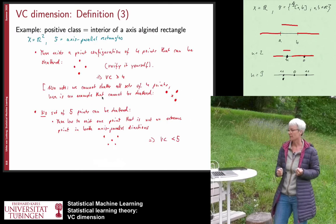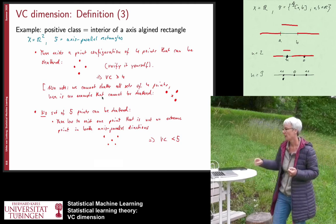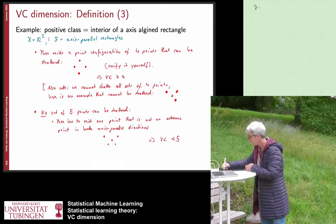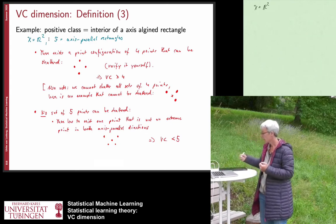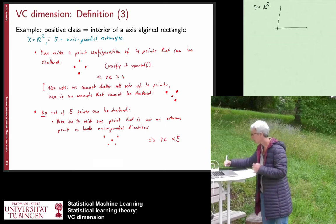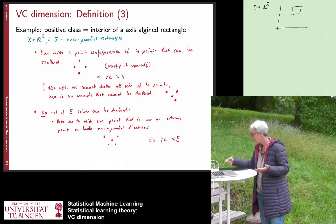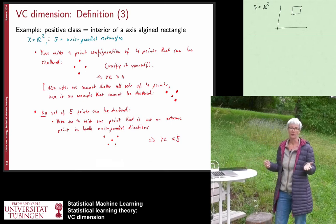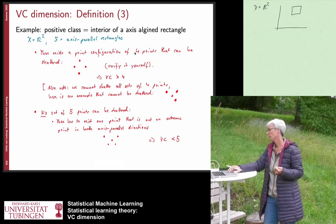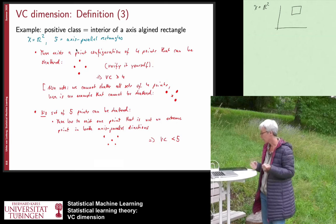Here are a couple more examples — simple toy examples that help build intuition. Our space X is now R². The function class consists of axis-parallel rectangles, with the label being plus one inside the rectangle and minus one outside. The question is: does there exist a point configuration of n=4 that can be shattered?